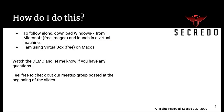So how do you do this? How do you follow along? It's easy. You can go to Windows and just Google search 'Windows 7 test images Microsoft.' You'll pull up a website that shows Microsoft free images. You can download those and launch them in a virtual machine. I'm using VirtualBox, which is free on macOS.